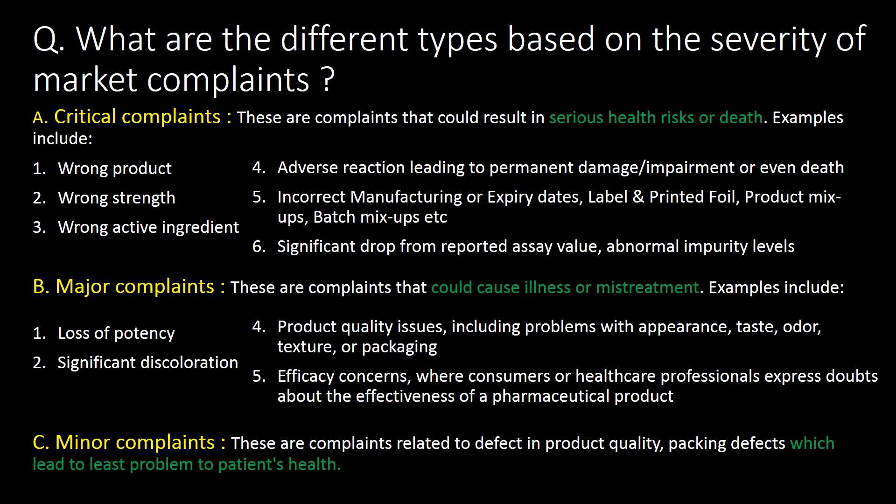What are the different types based on the severity of market complaints? Based on severity, there are mainly three types. First, critical complaints — these are complaints that could result in serious health risk or death; examples include wrong product or wrong strength. Second, major complaints — these could cause illness or mistreatment; examples include loss of potency or significant discoloration. Third, minor complaints — these relate to defects in product quality or packaging that lead to the least problem to the patient's health.